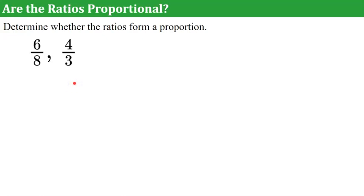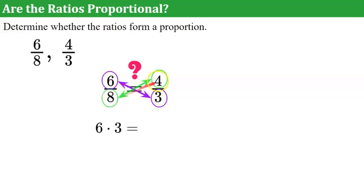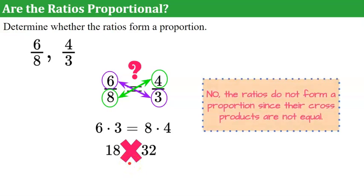Now let's put this to work. We are asked if these ratios are proportional, and we're going to determine whether or not they form a proportion. We put them together with an equal sign and question it: are they equal? I'm going to use the cross-product property to check. If they form a proportion, the multiplication across needs to be equal. So 6 times 3 needs to equal 8 times 4. 6 times 3 is 18, and 8 times 4 is 32. These are not proportional — they are not equivalent ratios and are not in a proportional relationship, since their cross-products are not equal.